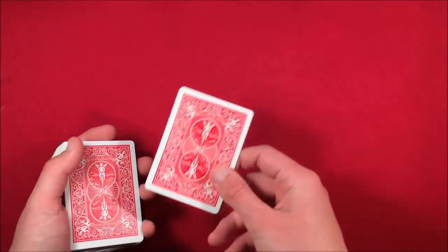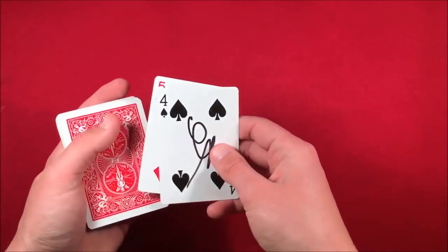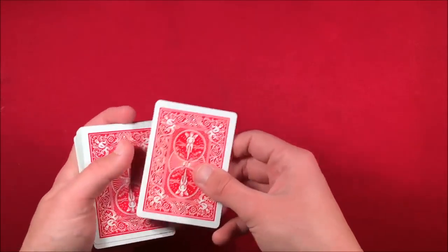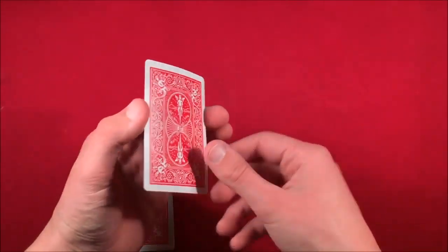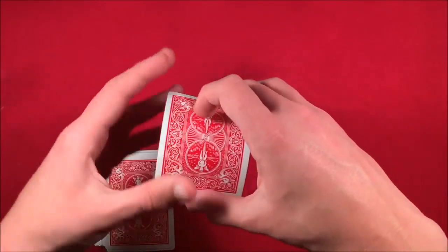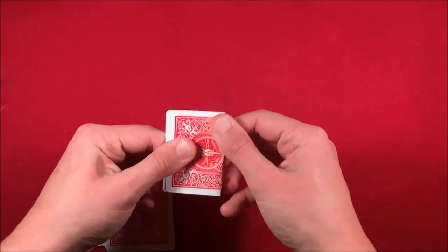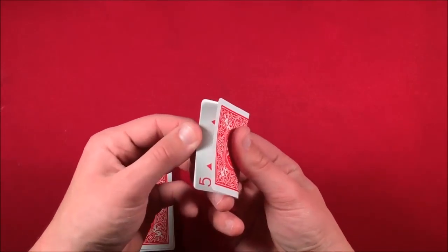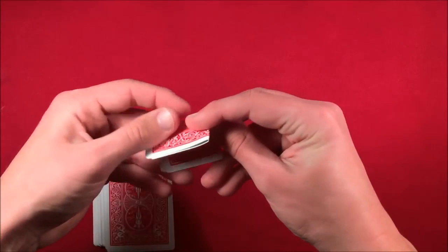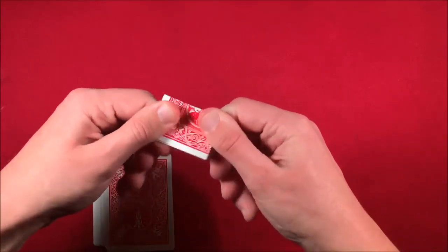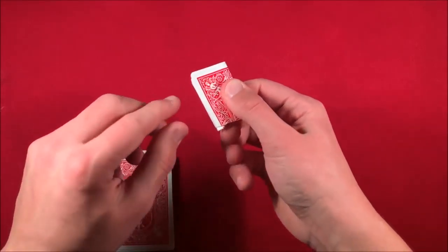This is where the video starts. The kid flips over the spectator's card, does the double lift, flips it over, and gives the card to the spectator. What you have to do is fold the card and make sure you fold it so the edges of the cards aren't seen, so the spectator doesn't get a flash of this card. You fold it up and have the spectator bite the card.